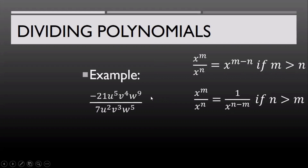Let's have this example. The first thing we're going to do is reduce the numerical coefficient to its lowest term. So we have negative 21 divided by 7, which gives us negative 3. For the variables, we apply the law of exponents: u raised to 3 because 5 minus 2, then v because 4 minus 3, and w raised to 4 because 9 minus 5. So the final answer is negative 3u cubed v w raised to 4.